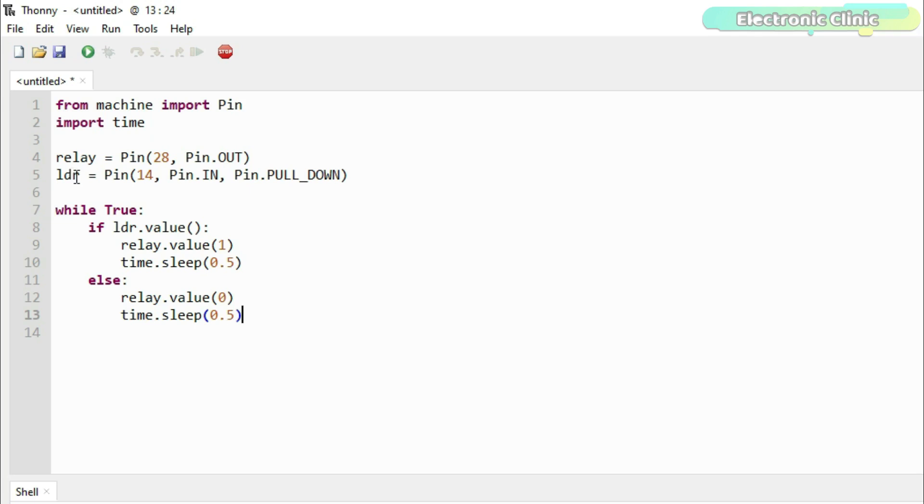I defined two pins and I'm going to call these as relay and LDR. As relay is an output device, that's why I set it as output. And as you know, LDR sensor is an input device, so that's why I set it as input.